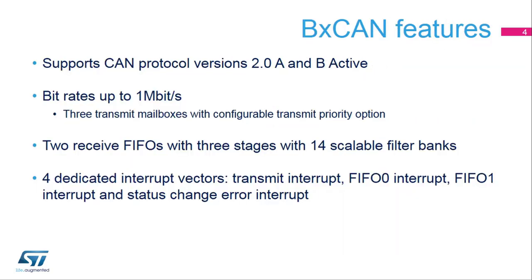The STM32 CAN peripheral supports the basic extended CAN protocol versions 2.0A and 2.0B active, with a maximum bitrate of 1 megabit per second. The BX CAN includes three transmit mailboxes with a configurable transmit priority option, and two receive FIFOs with three stages and 14 scalable filter banks. This allows the CAN to efficiently manage a high number of incoming and outgoing messages with a minimum CPU load.